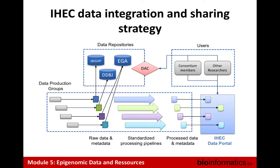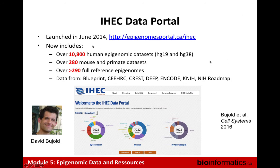As part of IHEC we do data generation and also collect data generated by different groups. One challenge with epigenomic — and genomic — data is that data from patients can be identifiable, so we have to be careful with raw data. Raw data ends up in controlled-access repositories like dbGaP or EGA, requiring data access committee approval. But we also make available processed files that are not identifiable, that you can use and visualize. We've developed a portal containing many datasets, and we'll go into that in more detail in the practical.